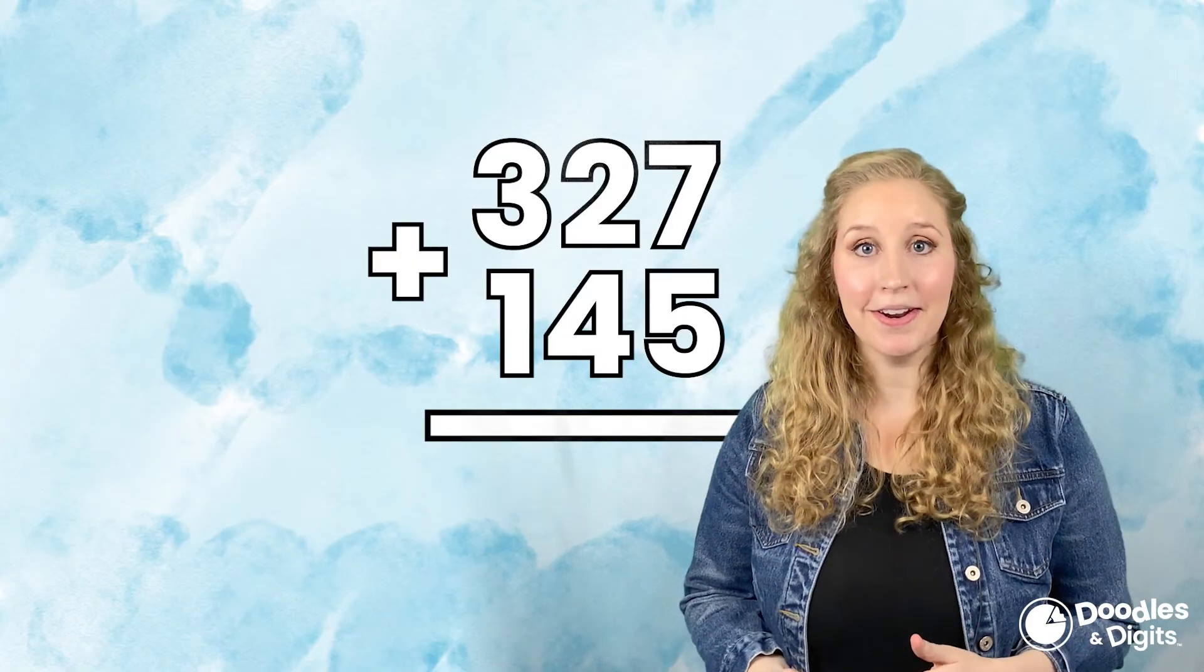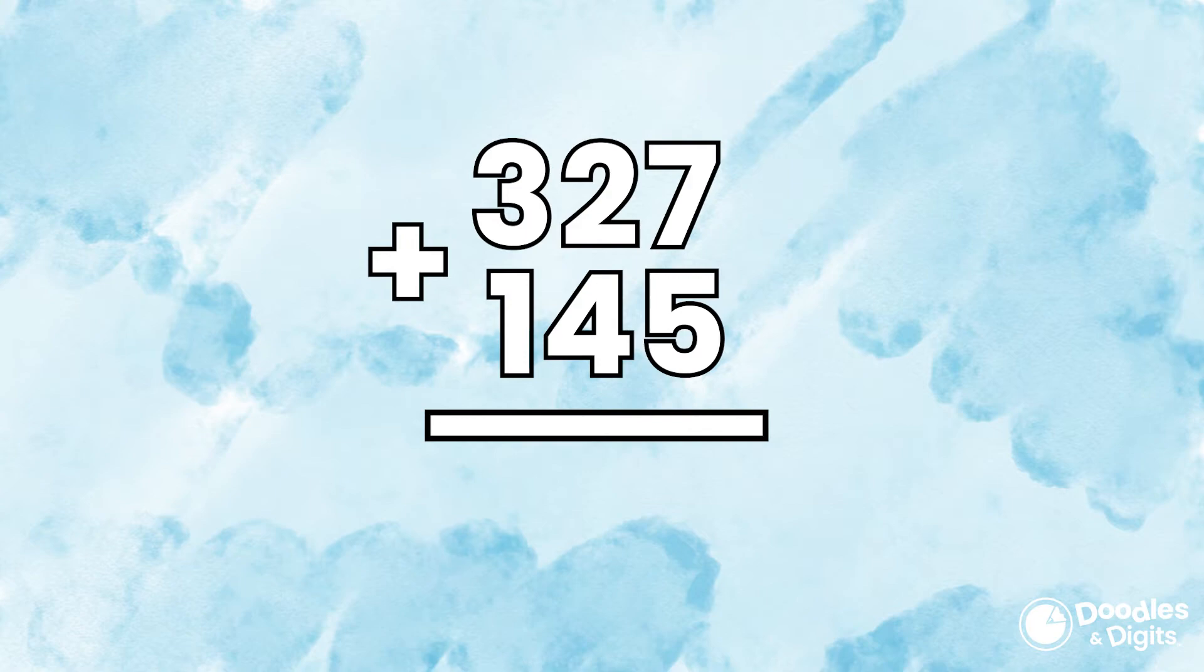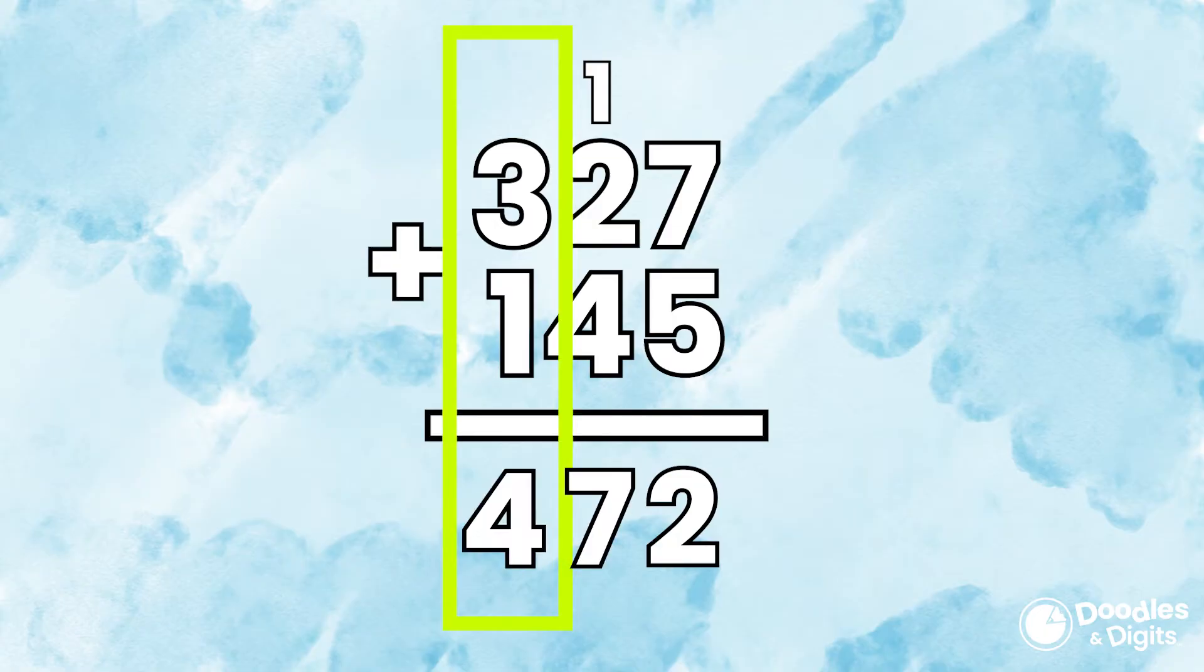All right, let's try to solve a few together. Let's look at this problem right here. 127 plus 145. We're going to start in the ones place. 7 plus 5 is 12. We're going to put the 2 in the ones place and carry the 1 into the tens column. 4 plus 2 plus 1 equals 7. Then we're going to go to the hundreds column 3 plus 1 equals 4. So our answer is 472.